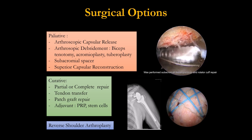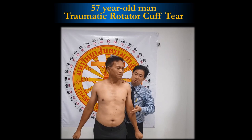Treatment options for failed cuff repair include: redo cuff repair if tissue is sufficient; palliative options like decompression or release with biceps surgery; and curative options such as revision repair, tendon transfer, patch augmentation, superior capsular reconstruction, or reverse shoulder arthroplasty.